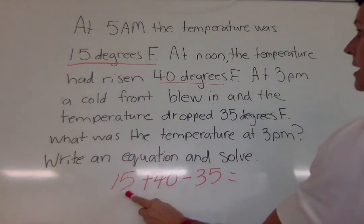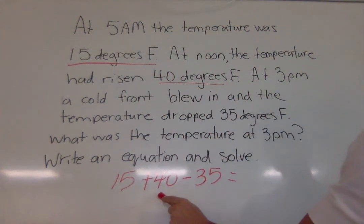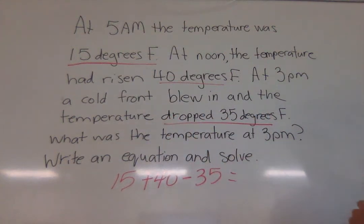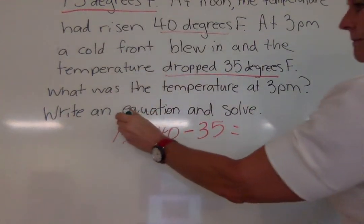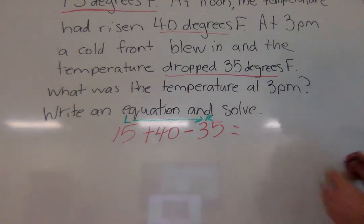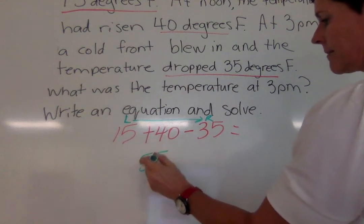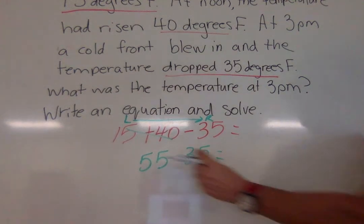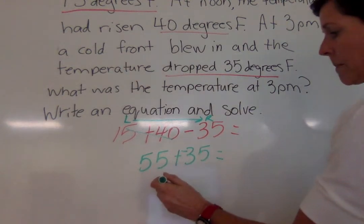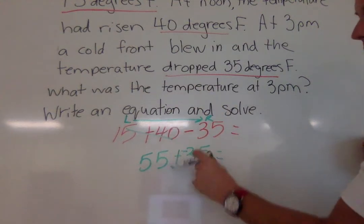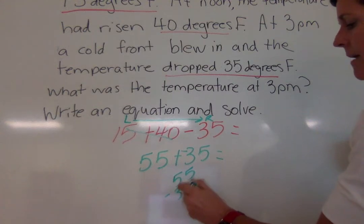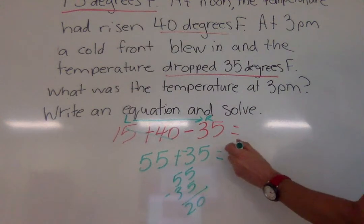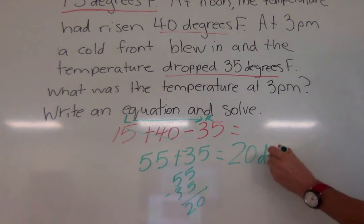What was the temperature at 3 p.m.? Write an equation and solve. So here's our equation. We have 15 degrees. It rose 40 degrees. And it dropped 35 degrees. So now let's solve this. We can do this in two steps. Working from left to right. 15 plus 40 is 55. So we've done that. Minus 35. 55 minus 35. It's plus negative 35. And it's negative 35 because the temperature dropped. 55 minus 35 is 20. So the temperature outside is 20 degrees Fahrenheit.